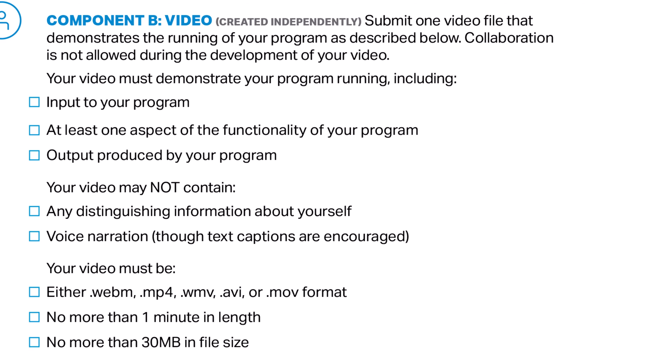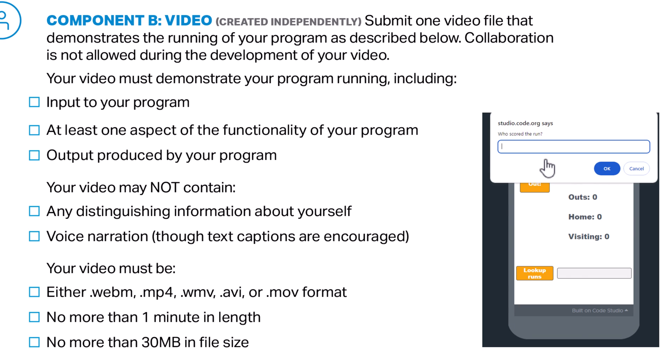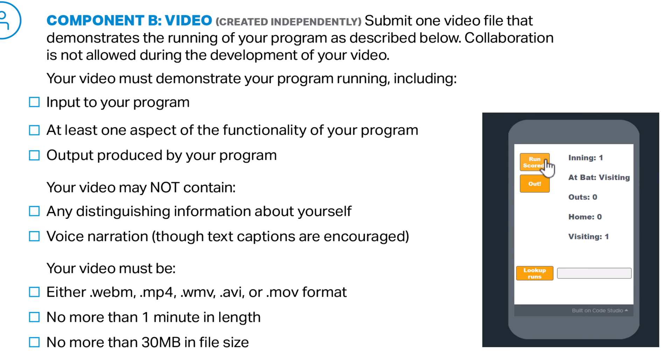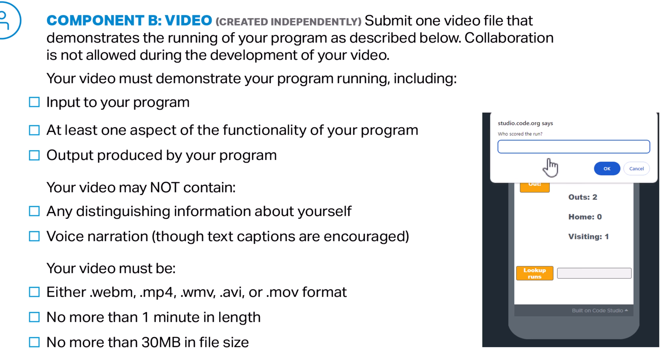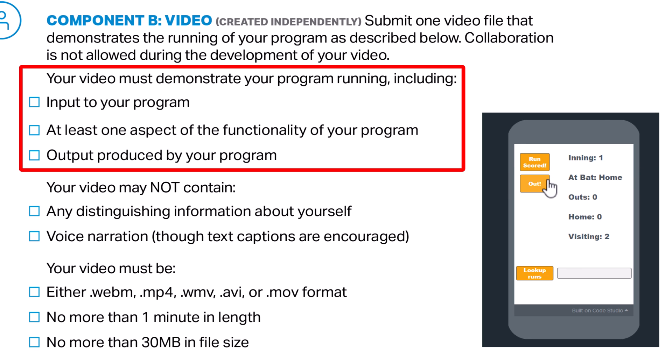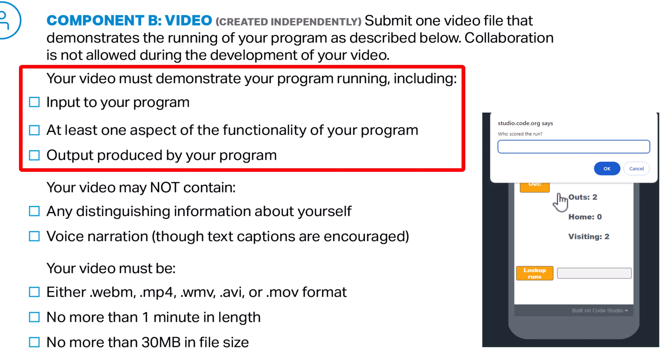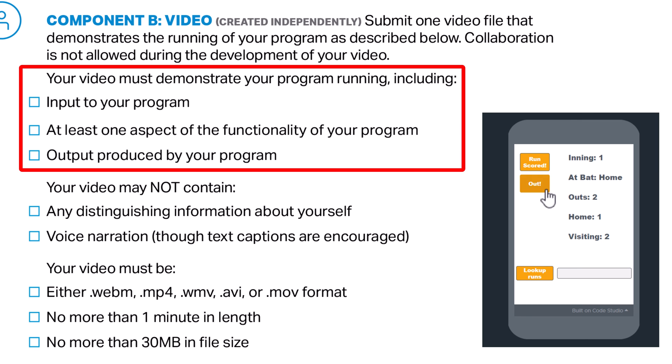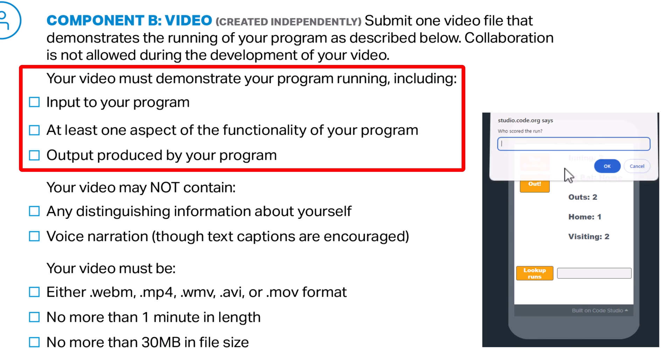Now let's talk about Component B, the video. The video must be done entirely independently. If you have a collaborative partner, you must each create your own video by yourselves. My students generally use the Screencastify Chrome extension, but check with your teacher to see what tool they recommend. The video only needs to show the user interface of the program, so don't worry about capturing any code, because it will just detract from the important part. The video demonstrates your program running, including input to your program. In my sample program, I would demonstrate the input by clicking on buttons and typing in pop-up boxes and a text box.